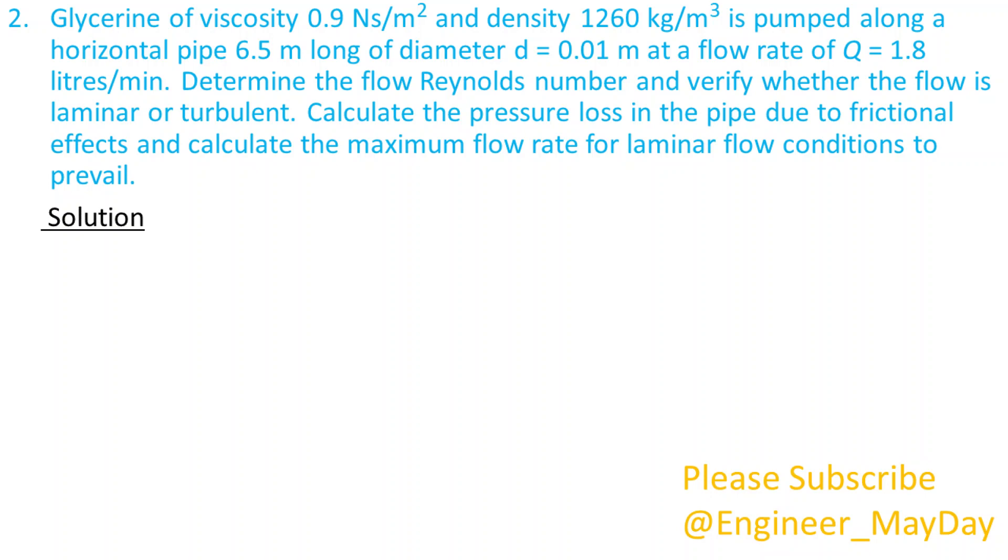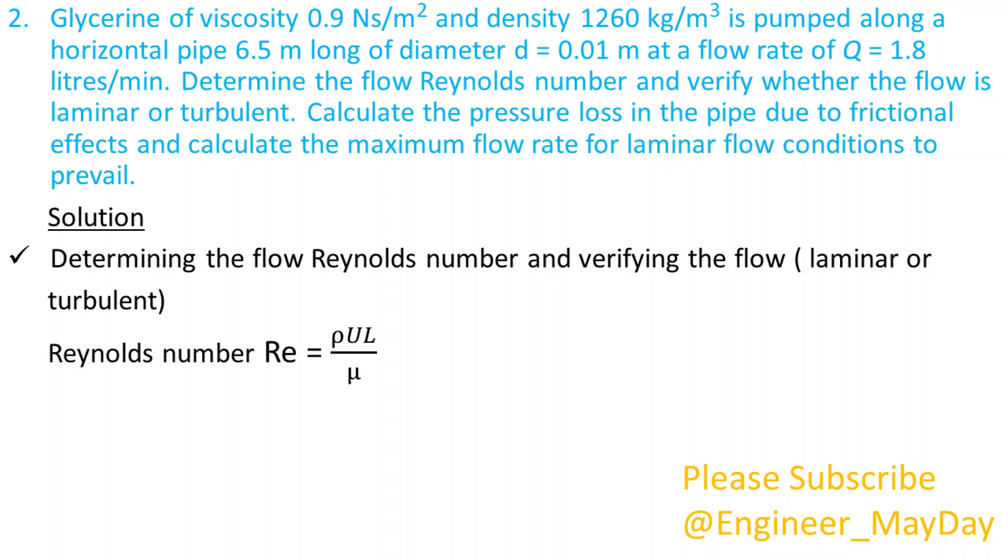Solution. Determining the flow Reynolds number and verifying the flow, laminar or turbulent. Reynolds number is equal to rho multiplied by U multiplied by L divide by mu. Where rho is the density of the fluid, U is the velocity of the fluid, L is the characteristic length and mu is the dynamic viscosity.